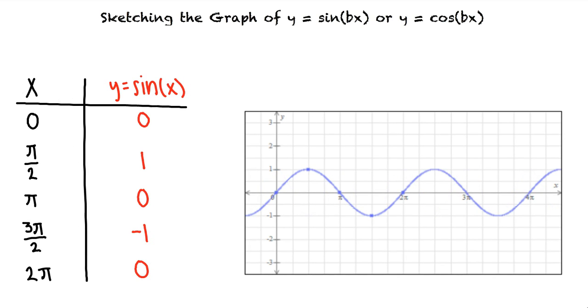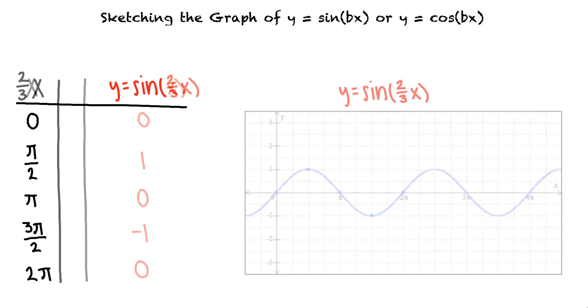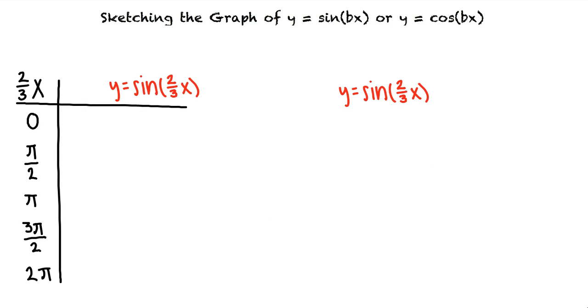Here we have the standard graph of y equals sine of x. Now let's see what would happen if we graph y equals sine of 2 thirds x. To find five key points for the graph we want the angle 2 thirds x to equal 0, pi halves, pi,